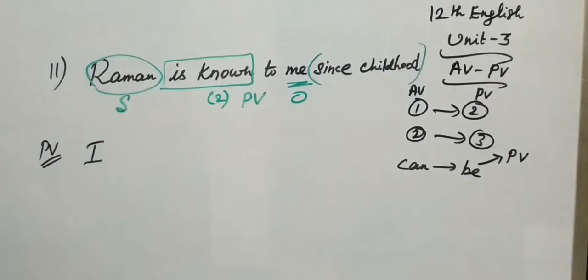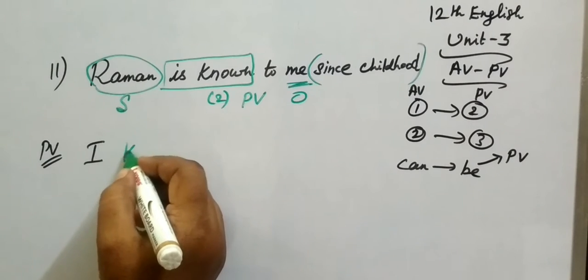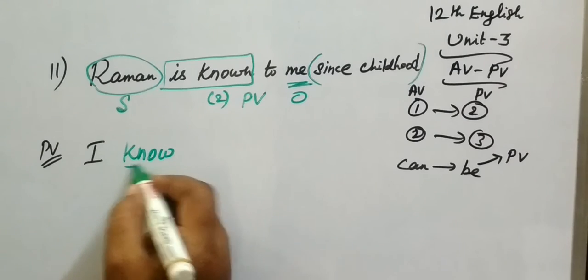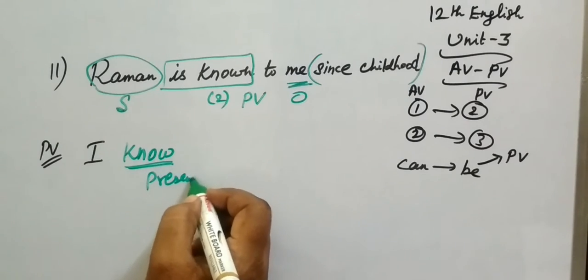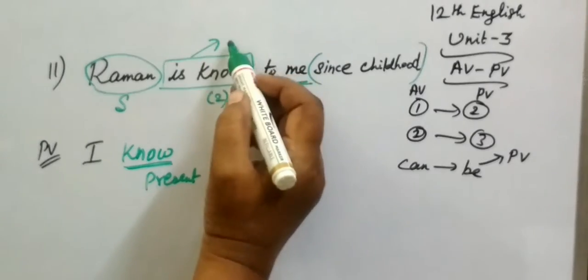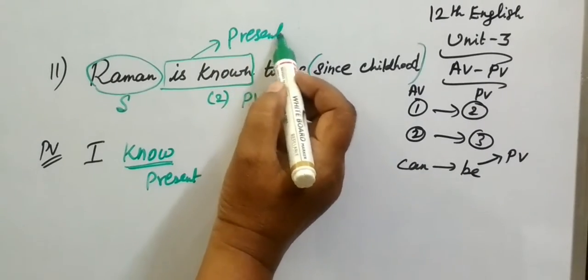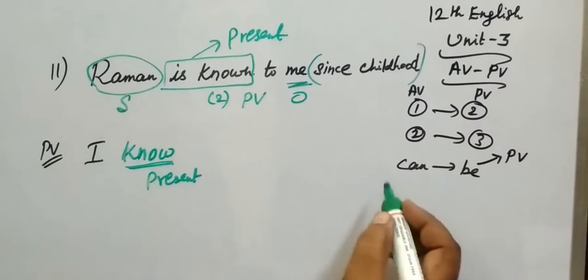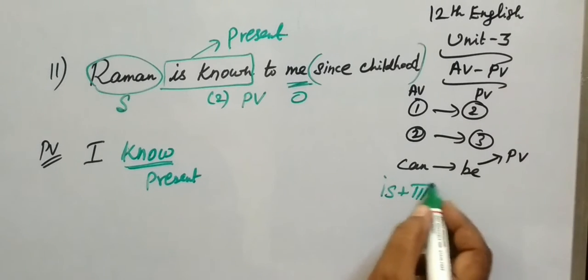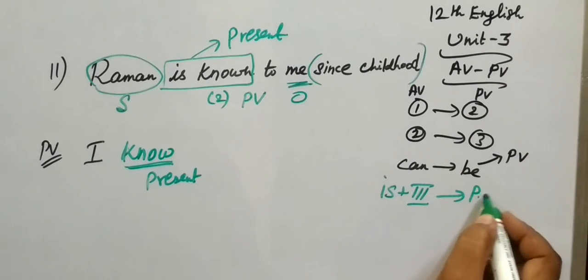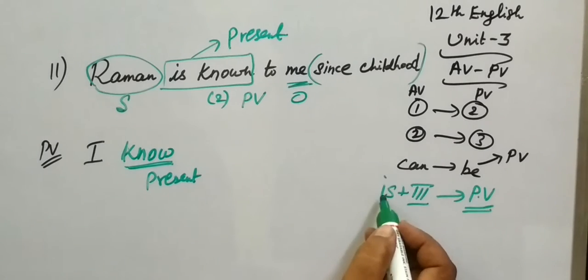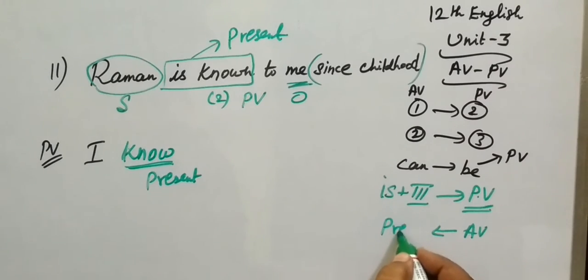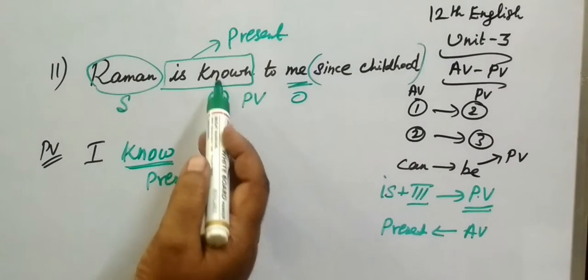I know Raman. This refers to present tense. The passive voice structure is: is plus third form. When changing to active voice, present tense: use present tense. The structure for passive voice is is plus third form.